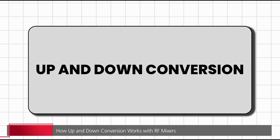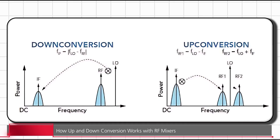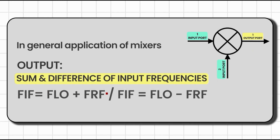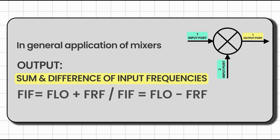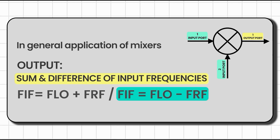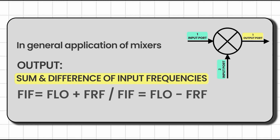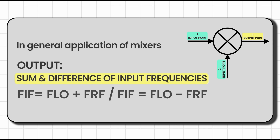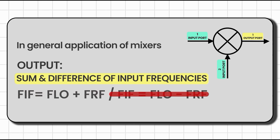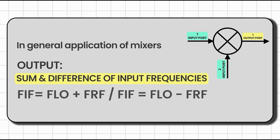Next we'll understand the concept of up and down conversion. In general application of a mixer, we don't keep both frequencies. Using mixers we can produce two frequencies — the sum and subtraction of the input port frequencies — but in practice we reject one of them: either we reject FLO + FRF or FLO − FRF, based on the requirement of our mixer design.